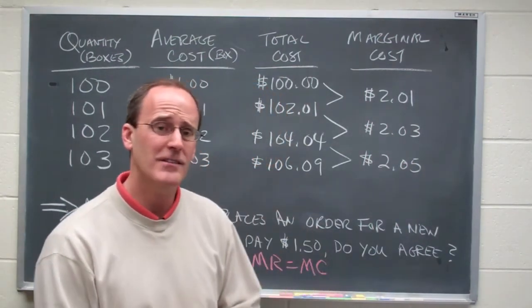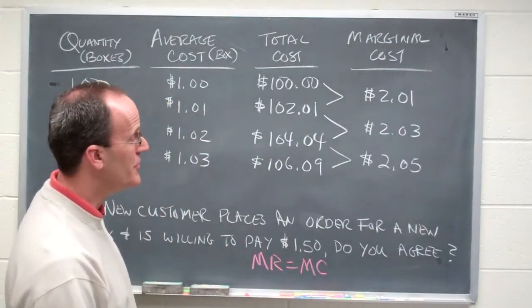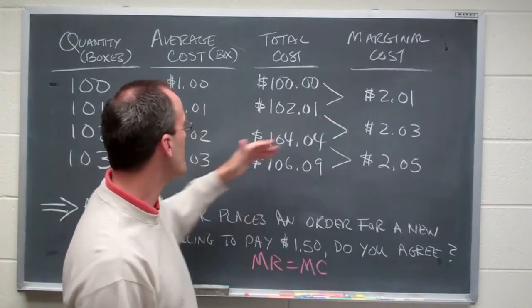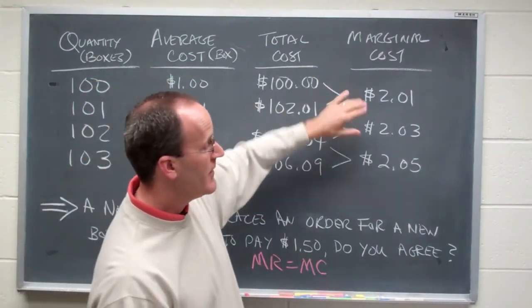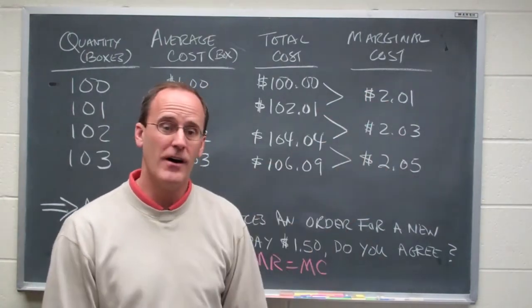Okay, now we've got marginal cost. We've got marginal revenue. We want to compare the two. Well, in any case here, increasing the firm's output of boxes causes it to have to spend an additional between 201 and 205.